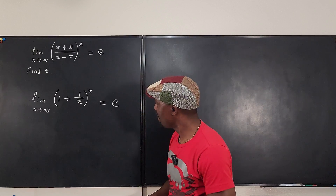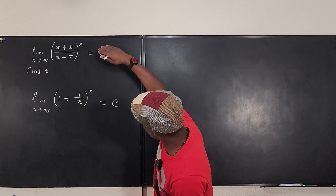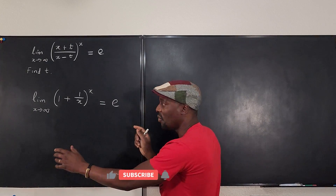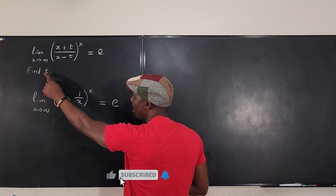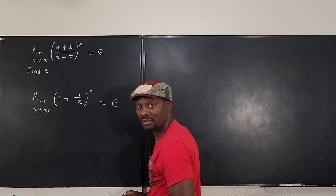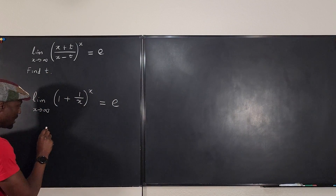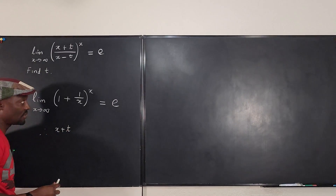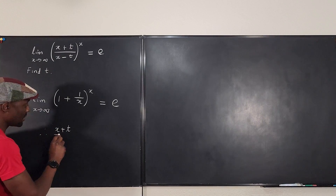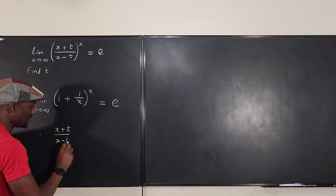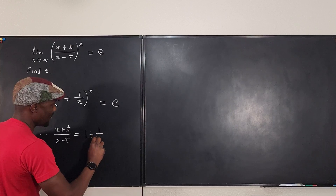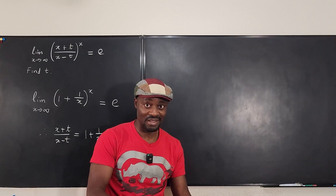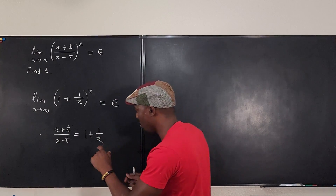This looks exactly like that definition except that what's inside the parentheses is different — everything else is the same. So if I can make this look like that, I can find the value of t I'm looking for. I'm going to set x plus t divided by x minus t equal to 1 plus 1 over x, where t is a constant. All I have to do is find the value of t in terms of x.